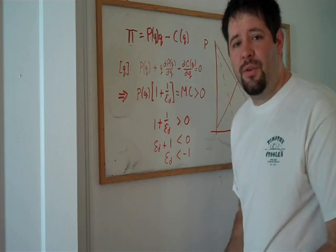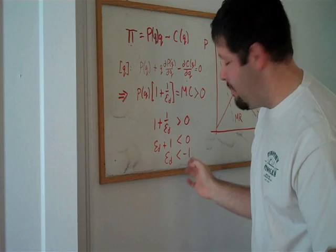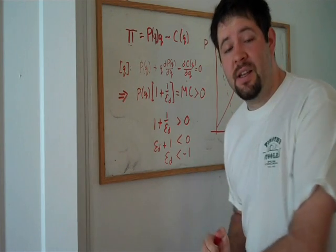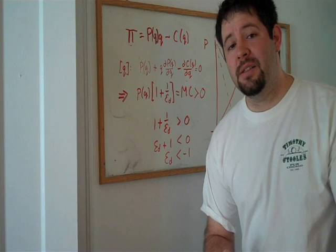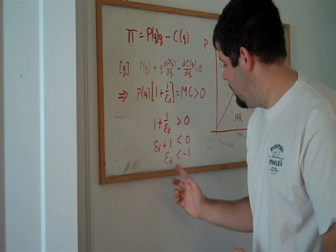The elasticity of demand must be less than negative one. In magnitude, it must be bigger than one. Because it's a negative number, it's going to be a number like negative 1.5. Now, what this tells us is that a monopolist must price on the elastic portion of the demand curve.